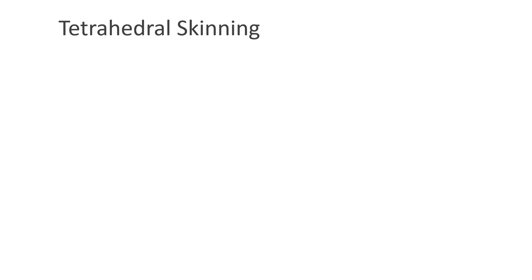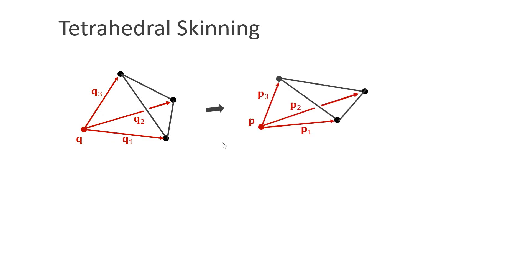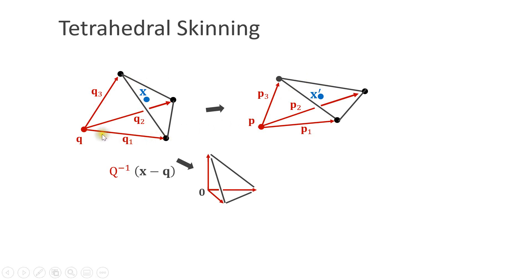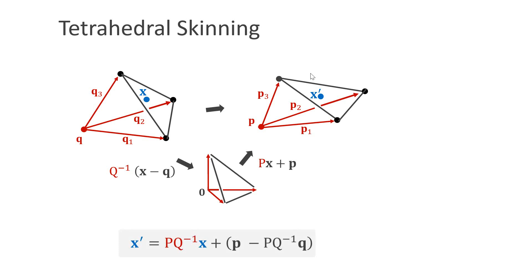We can use the idea of inverse matrices for tetrahedral skinning — deforming a visual mesh along with the surrounding volumetric tetrahedral mesh. Let's assume we have a tetrahedron defined by the origin q and vectors q1, q2 and q3, and a deformed version defined by origin p and vectors p1, p2 and p3. We are looking for a transformation that transforms a vector x along with the tetrahedron to arrive at position x prime. We interpret q1, q2 and q3 as the column vectors of a matrix Q. Transforming the tetrahedron using the vector q and the inverse of matrix Q gives the unit tetrahedron in the regular coordinate system, and then applying the transformation defined by p, p1, p2 and p3 brings us into the deformed tetrahedron. The combined transformation looks like this.